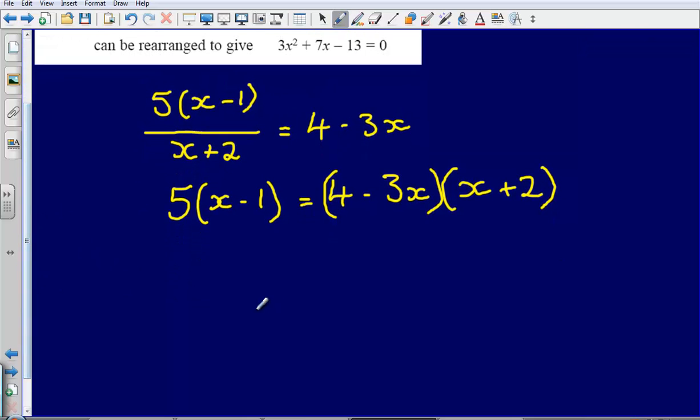That has got rid of the fractions involved. Now I think it's probably a good idea to expand the brackets, so that's what I'll do. Expanding the brackets gives me 5x minus 5 is equal to...